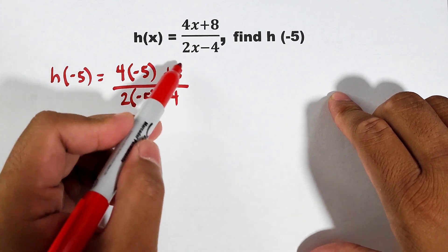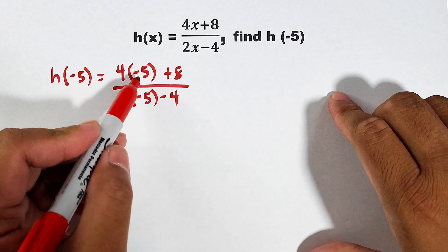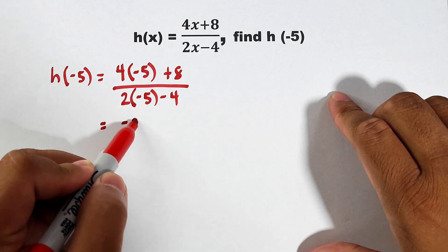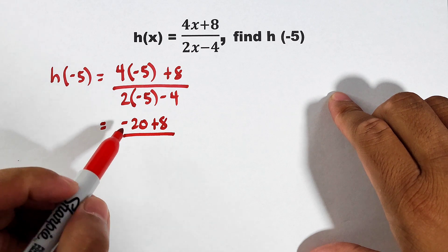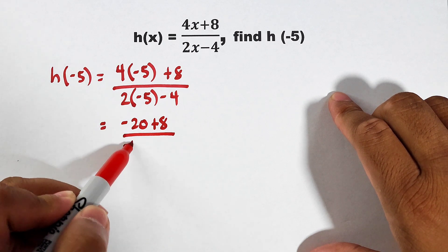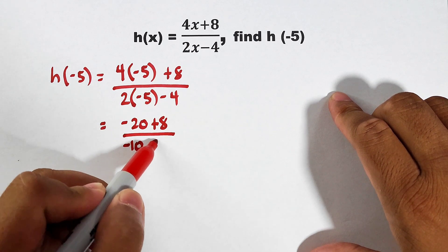Let's continue. Simplify your numerator first. 4 times negative 5 is negative 20 plus 8 over 2 times negative 5 is negative 10 minus 4.